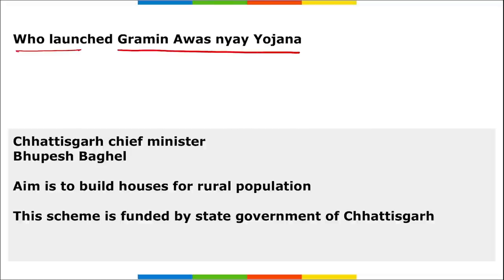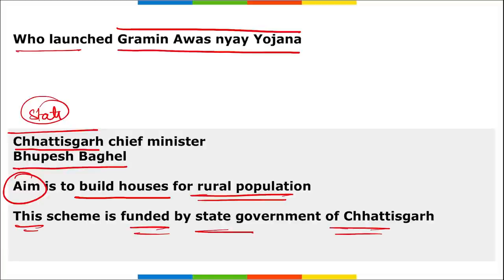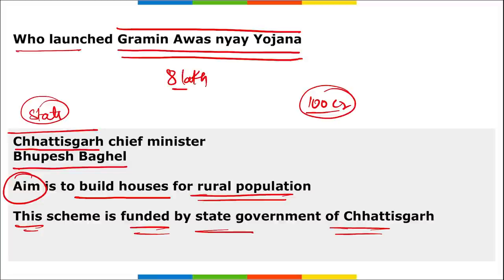Who launched the Grameen Awas Niai Yojana? It was launched by Chhattisgarh's Chief Minister Bhupesh Baghel. The aim is to build houses for the rural population, funded by the state government of Chhattisgarh. 100 crore rupees has been allocated in the budget for this scheme. It is the outcome of a survey conducted by the Panchayat and Rural Development Department. It will help families facing challenges in obtaining house approval due to eligibility criteria under the Pradhan Mantri Awas Yojana. The beneficiaries under this scheme are almost 8 lakh people.